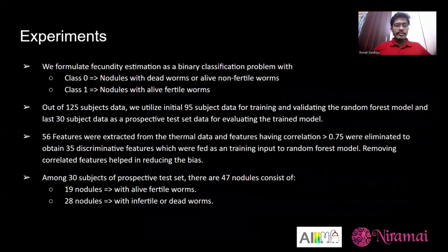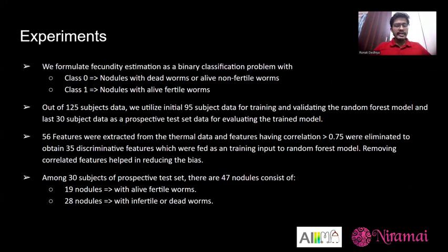For the experiment, fecundity is formulated as a binary classification problem: Class 0 with a dead worm or alive non-fertile worm, and Class 1 with an alive fertile worm. Out of 125 subjects, 95 subject data are used for training and validating a random forest model, and 30 subject data are used as a prospective test set. From 56 features, highly correlated features are removed, leaving 35 discriminative features to train the thermal imaging model. The test set of 30 subjects contains 47 nodules — 19 with alive fertile worms and 28 with infertile or dead worms.